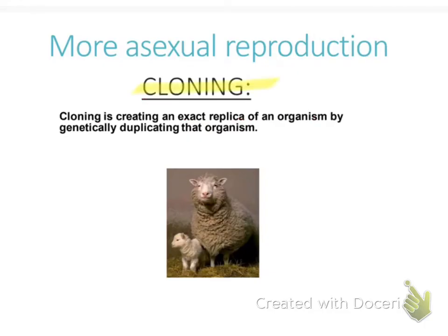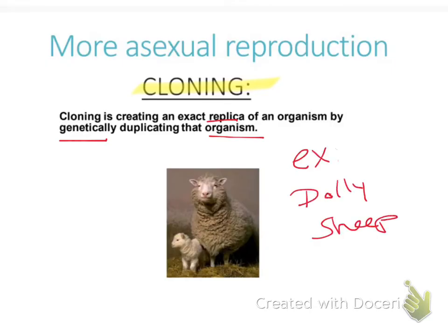Next is cloning. Cloning is creating an exact replica of an organism by genetically duplicating that organism. Cloning occurs in a laboratory setting only. This picture is Dolly the sheep — they mastered this and cloned the sheep Dolly, I believe around 1996. Cloning of whole organisms has not been perfected; there are lots of problems. But you can also clone a cell, and there are fewer issues with that.